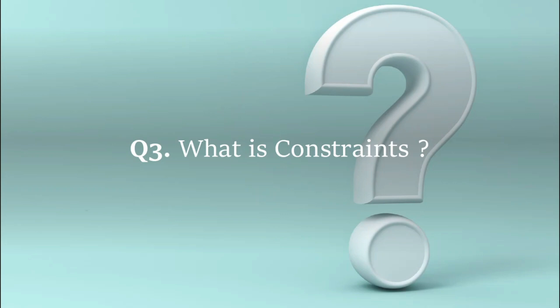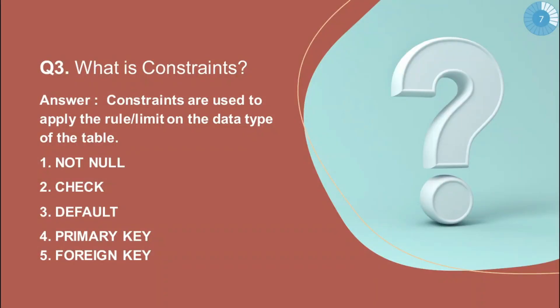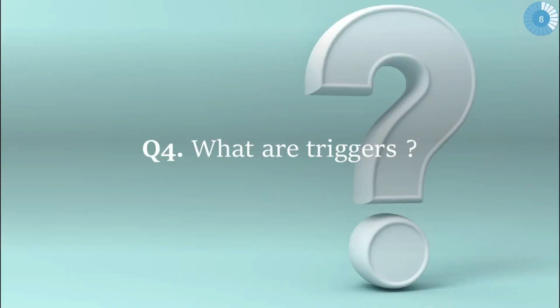The third question is: what are constraints? Constants — or constraints — are used to apply rules and limits on the data in a table. There are basically five types of constraints: NOT NULL, CHECK, DEFAULT, PRIMARY KEY, and FOREIGN KEY. These are all the constraint types — a very basic question.